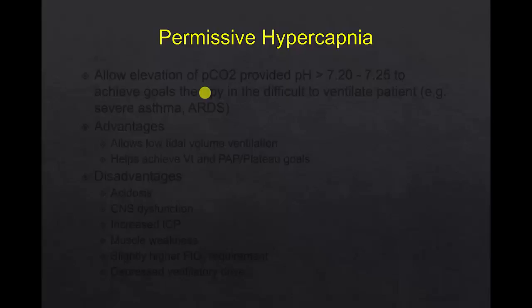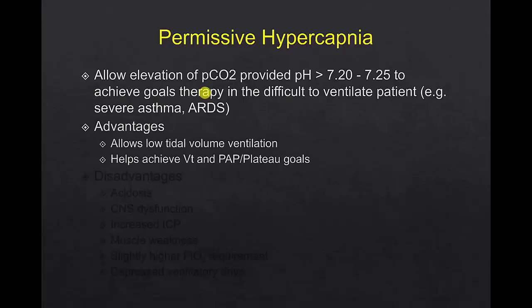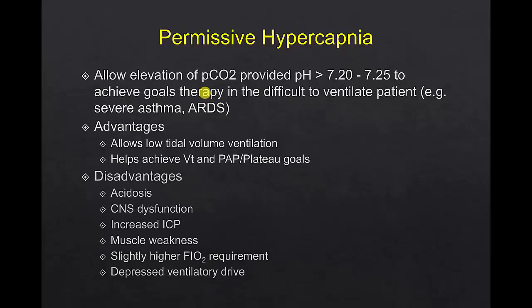Permissive hypercapnia is intentionally allowing elevation of pCO2, provided pH remains acceptable at around 7.2, to allow achievement of goals of therapy in the difficult-to-ventilate patient, such as in severe asthma or ARDS. Advantages include allowing us to achieve low tidal volume and low pressure goals, but disadvantages include acidosis, CNS dysfunction, elevated intracranial pressure, secondary muscle weakness, slightly higher FiO2 requirement, and suppressed respiratory drive.